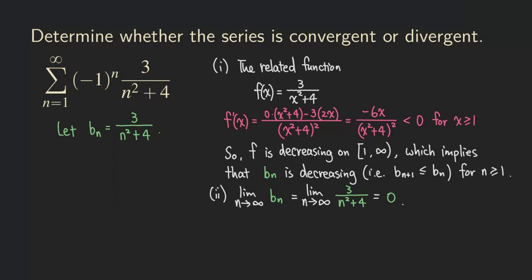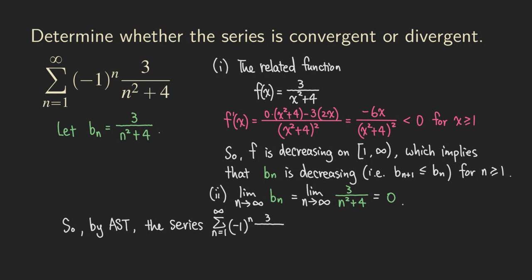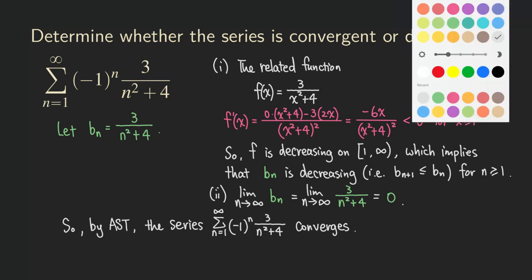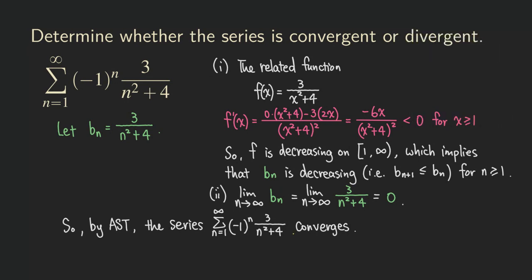Since both conditions are satisfied for this alternating series, by the alternating series test this series converges. Therefore, by the AST, the series from n equals 1 of (−1)^n times 3 over n squared plus 4 is convergent.